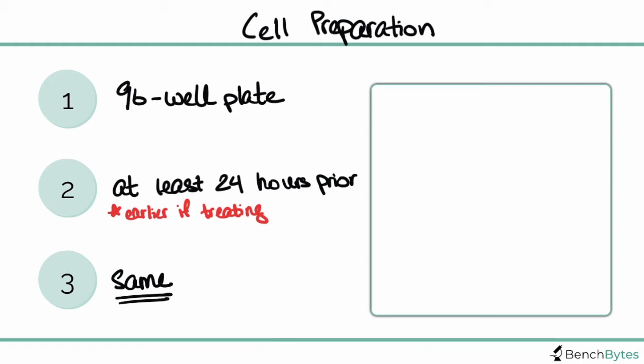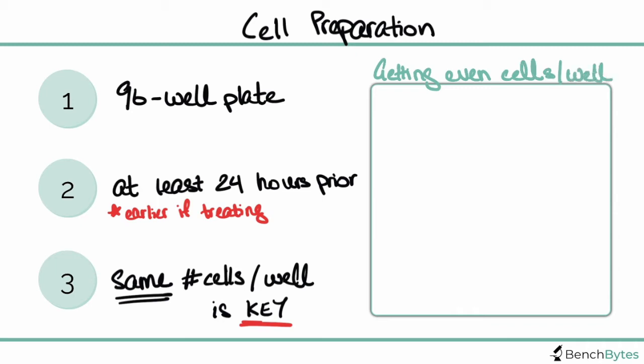The most important thing about plating this assay is that you plate the exact same number of cells for each well. This is one of the most key aspects of getting this correct. The best way to do this is to actually make a master mix of your cells.